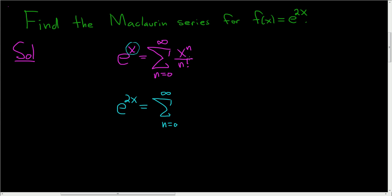And again, x is going to be 2x, so here we have 2x to the n divided by n factorial.